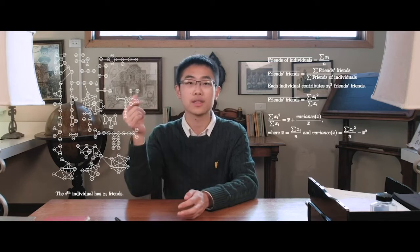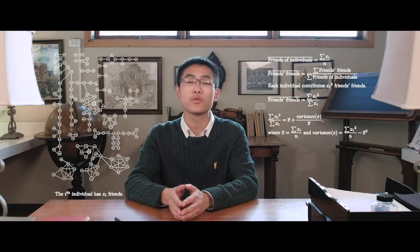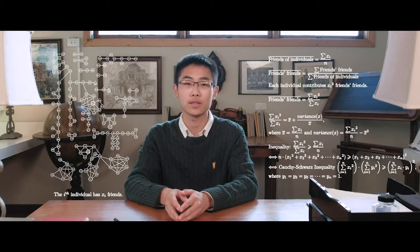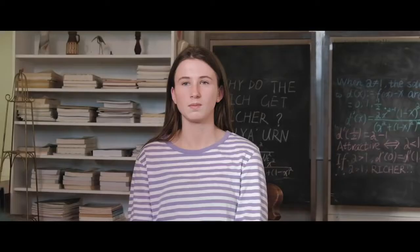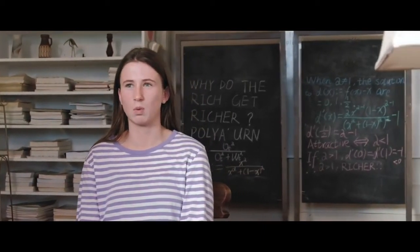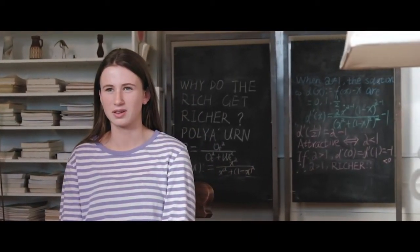And with a little tweak in algebra, we get this equation. And we can prove this using the Cauchy-Schwarz inequality. It shows that the average number of friends of friends is greater than the average number of friends of individuals. And for my friends as well, their friends have more friends than they do? Precisely.